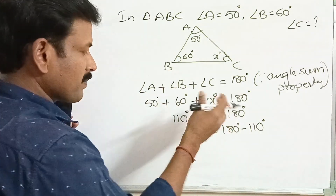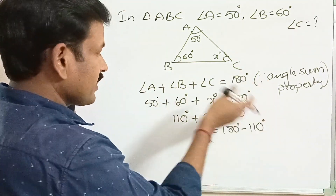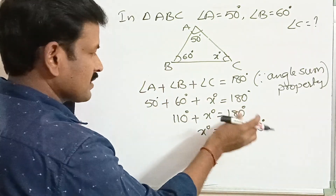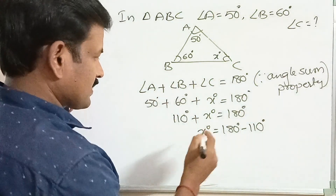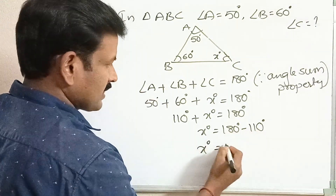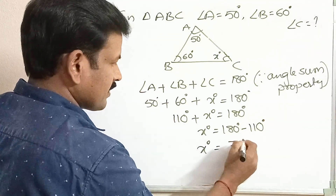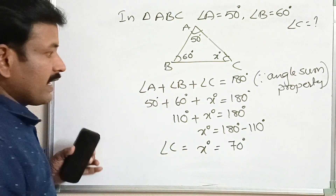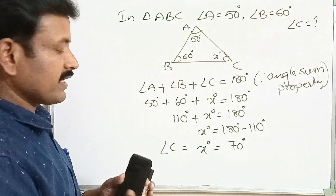When we transpose any quantity from either the LHS to RHS or RHS to LHS, a plus quantity becomes minus and a minus quantity becomes plus. So x degrees equals 180 minus 110, which is 70 degrees. Therefore, angle C equals 70 degrees.